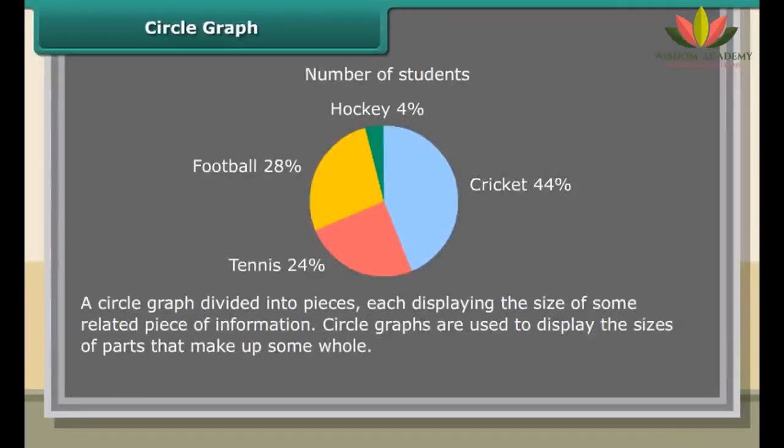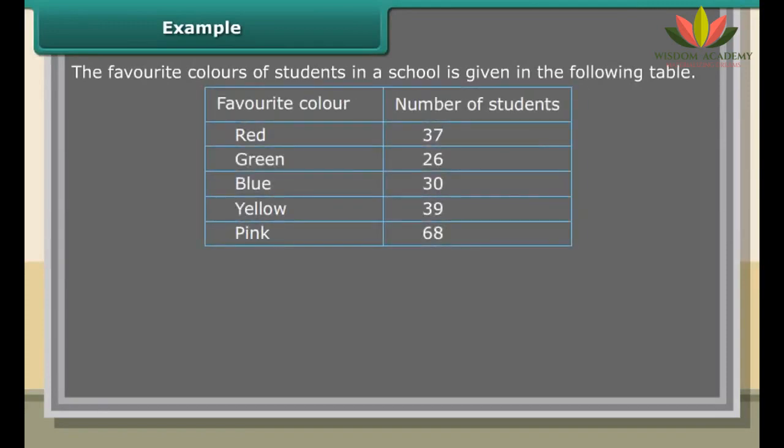Histogram: A histogram is graphic representation of the frequency distribution of a continuous variable. Rectangles are drawn in such a way that their bases lie on a linear scale representing different intervals and their heights are proportional to the frequency of the values within each of the intervals.